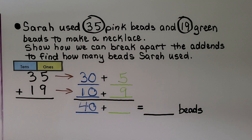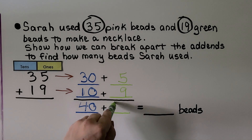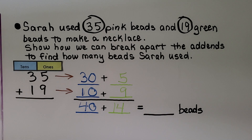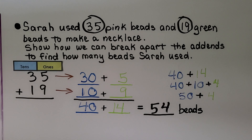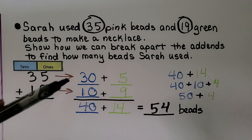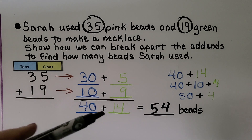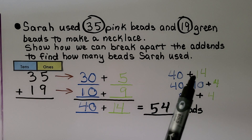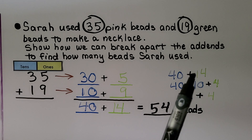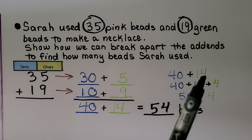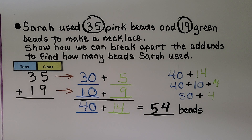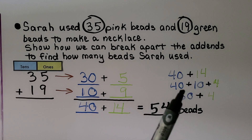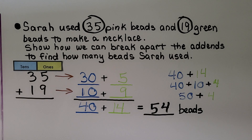We add the ones: 9 plus 5 more is equal to 14. Now we have 40 plus 14. We regroup the 10 from 14 and have 4 ones left. 14 is 10 plus 4. We add 40 plus 10 to get 50, then add the 4 that was left over. We got 54.